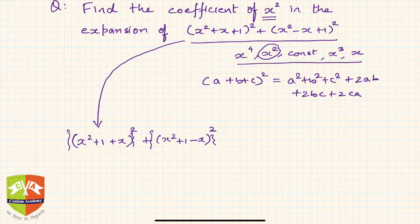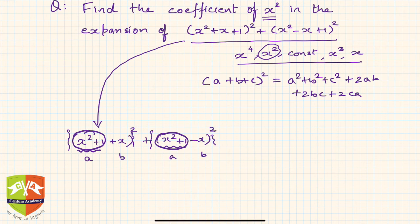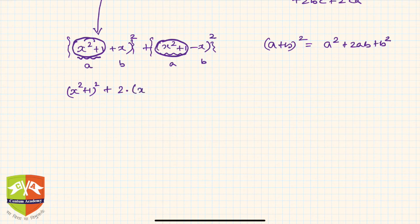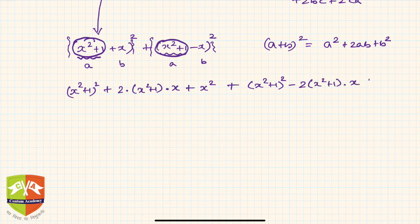If we treat (x²+1) as a and x as b, we apply (a+b)² = a² + 2ab + b² and (a-b)² = a² - 2ab + b². Expanding the first term gives (x²+1)² + 2(x²+1)x + x², and the second gives (x²+1)² - 2(x²+1)x + x².